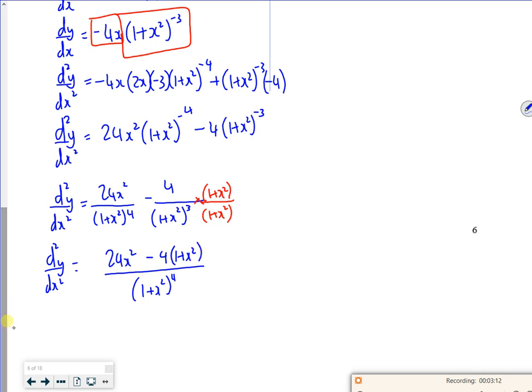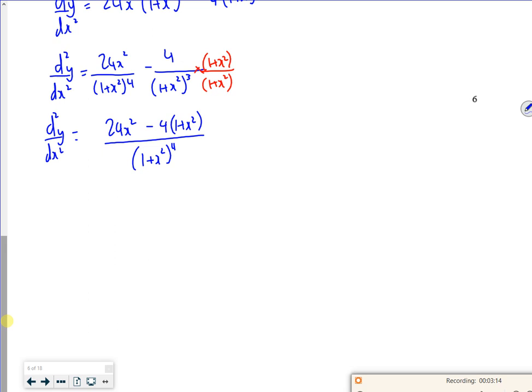So then if I expand my brackets, I've got 24x² minus 4 times x², so that's going to be 20x², and I've got minus 4, all over 1 plus x² to the power of 4. So that's my d²y by dx². So that's fine, that's good.